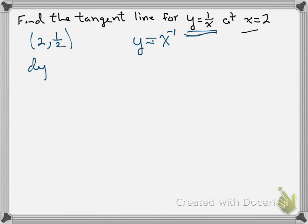So now we'll calculate our dy dx, which is negative x to the negative 2. If we want, we could write that as negative 1 over x squared.